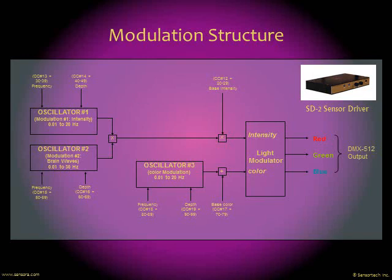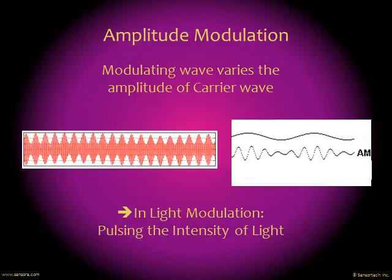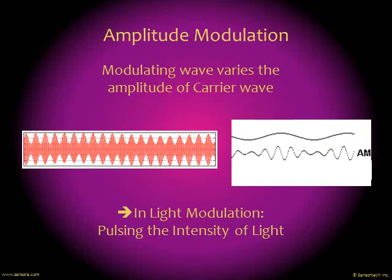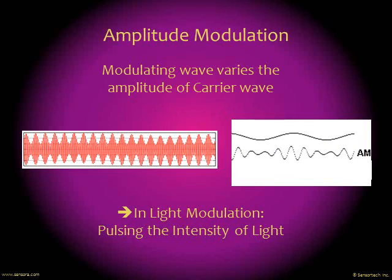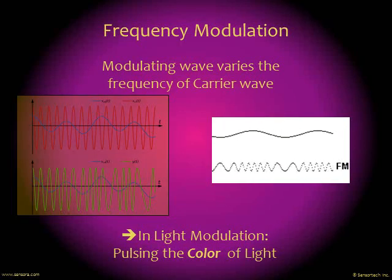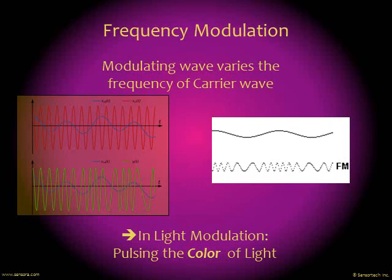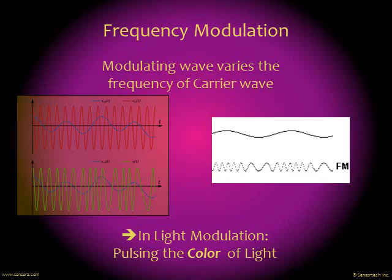Here's an example of the type of oscillator structure that is used in light modulation, where you have three oscillators for each light source in the system. You'll have two controlling or modulating the intensity of the light, and one controlling the color of the light. Intensity modulation corresponds to making the light brighter or less bright at the frequency you want to work with. Color modulation is a form of frequency modulation of the light, alternating between different colors of light at the frequency that you want to work at.